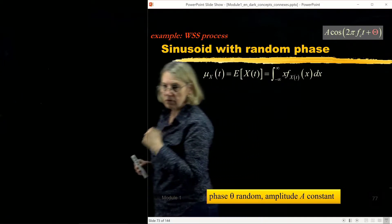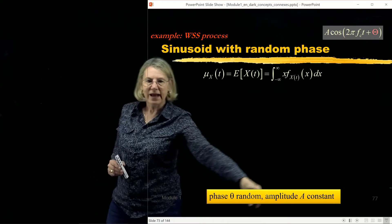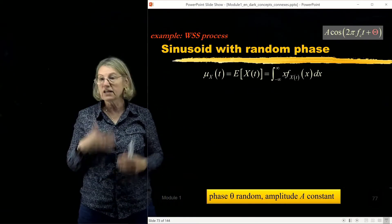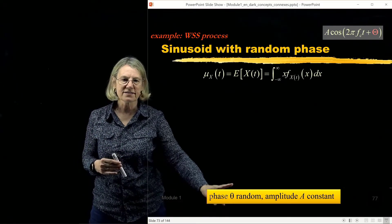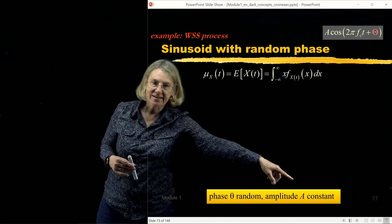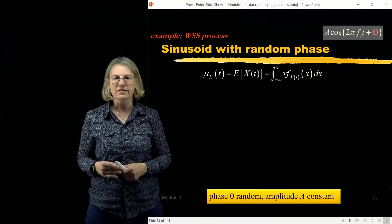So the phase is random, the amplitude is constant, and I'm going to give you another example in a minute that looks similar. But right now the important thing to realize is A is deterministic and constant and phi is a random variable.